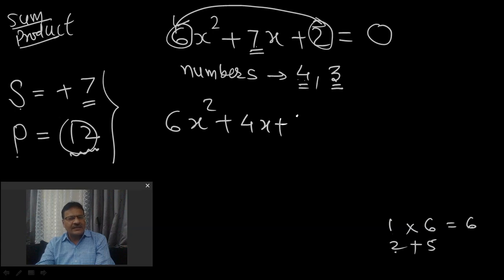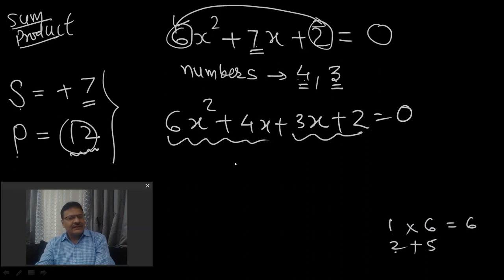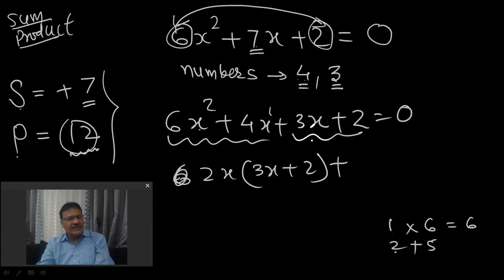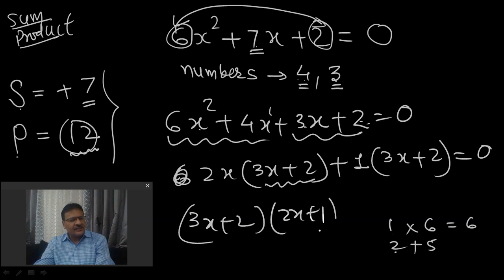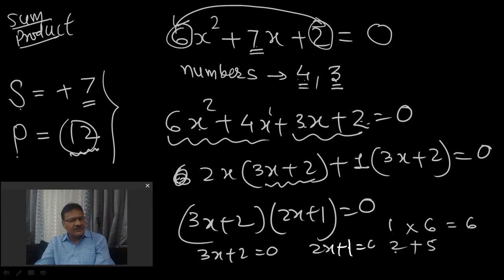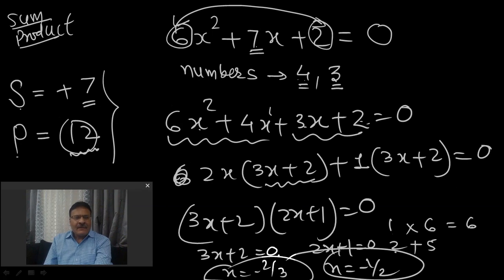So I split the middle term: 6x² + 4x + 3x + 2 = 0. Then take common factors — 2x is common in the first pair, giving 2x(3x + 2), and 1 is common in the second pair, giving 1(3x + 2). Then (3x + 2) is common overall, giving (3x + 2)(2x + 1) = 0. So x = −2/3 and x = −1/2.